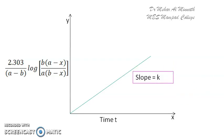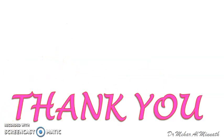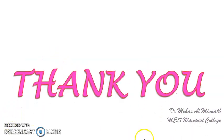This is the graphical plot for the second order reaction wherein two reactants are present with different concentrations. I hope this derivation and graph are clear. If you have any further clarifications, please feel free to ask.